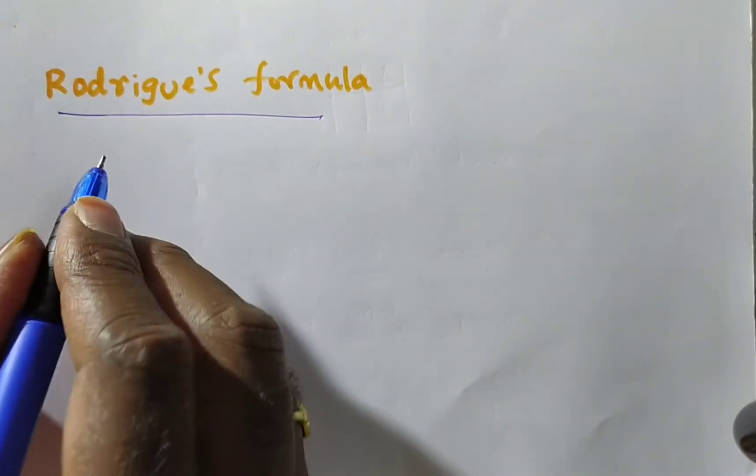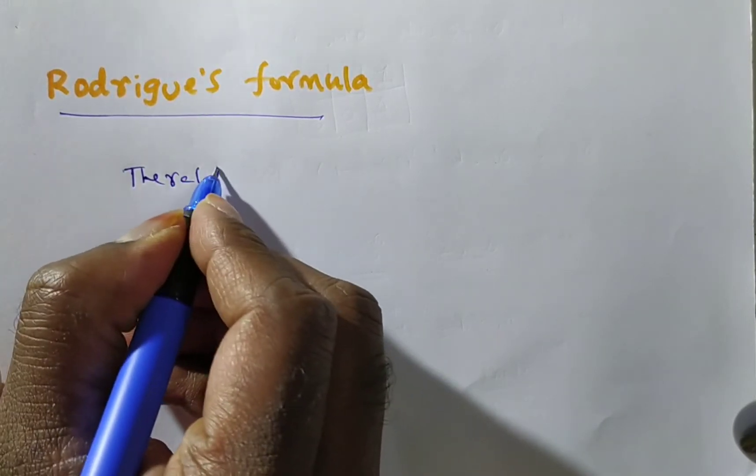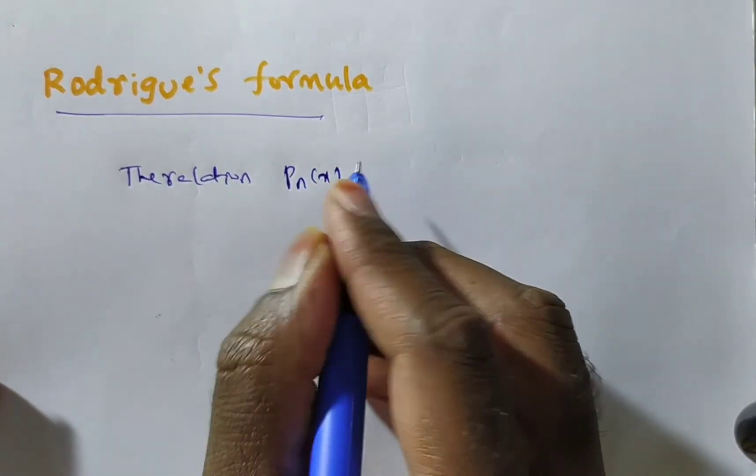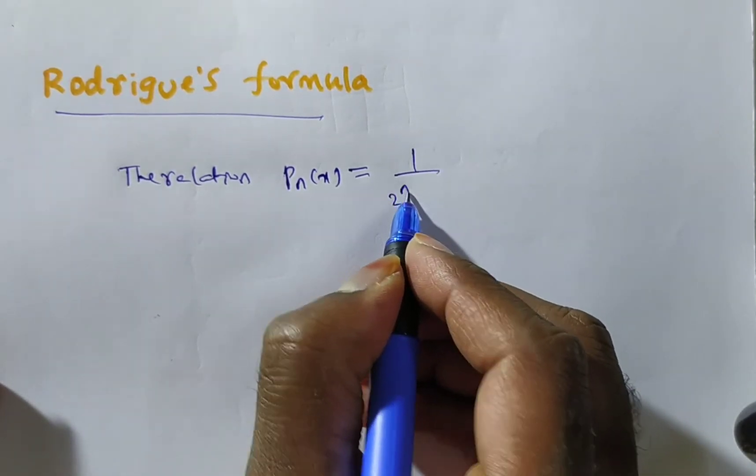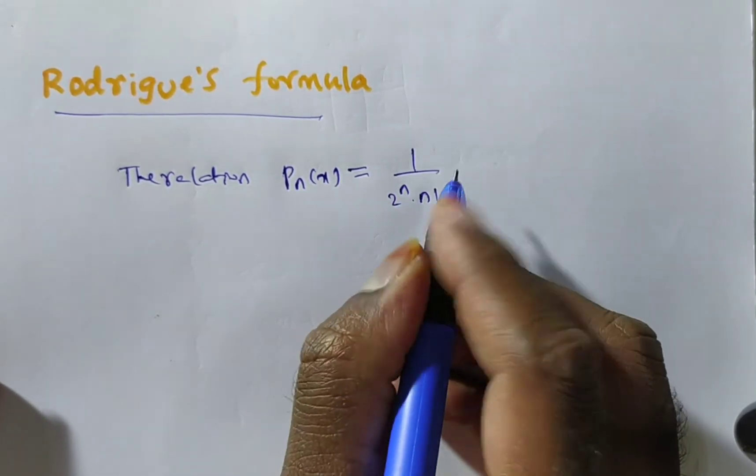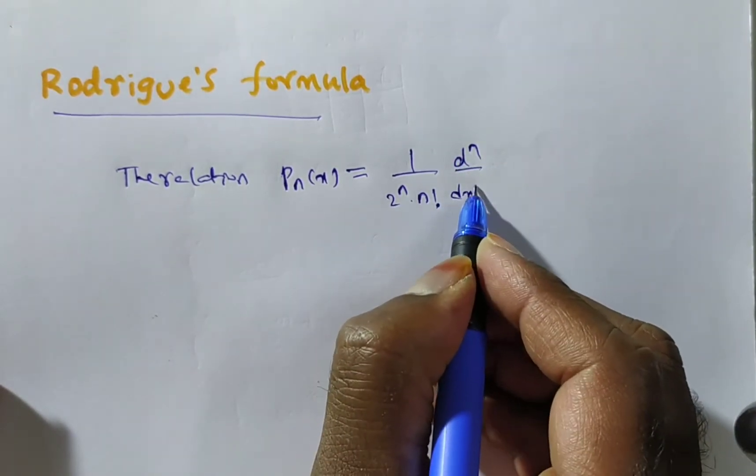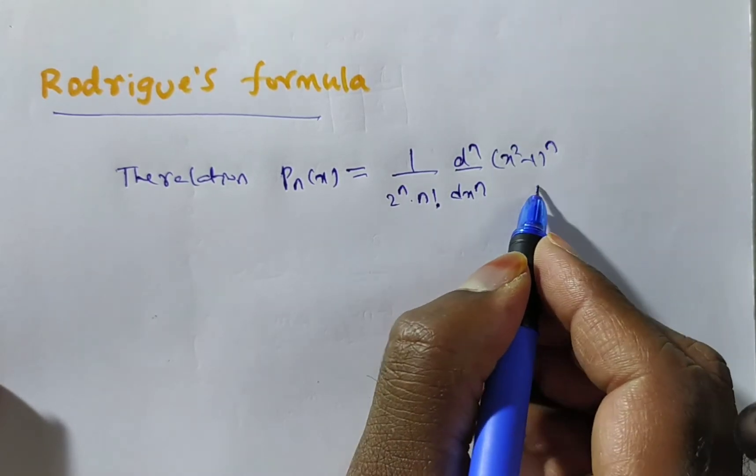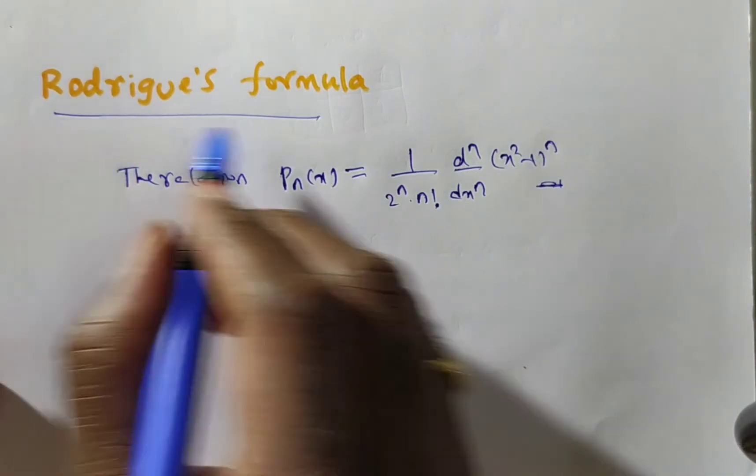The statement of Rodrigues' formula is: the relation P_n(x) equals 1 by 2 to the power n into n factorial into d to the power n by dx to the power n of (x squared minus 1) to the power n. This is known as Rodrigues' formula.